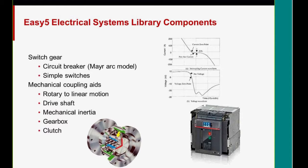As far as electrical control, there are a number of components available. One of these are circuit breakers and simple switches. We have mechanical coupling aids as a convenience in the library. So we have a way to convert rotary to linear motion. There's a drive shaft in there, an inertia, a gearbox, and a clutch. This is actually a triple S clutch that you're looking at next to the right there. And that is substantially modeled. You can model that with a clutch component.